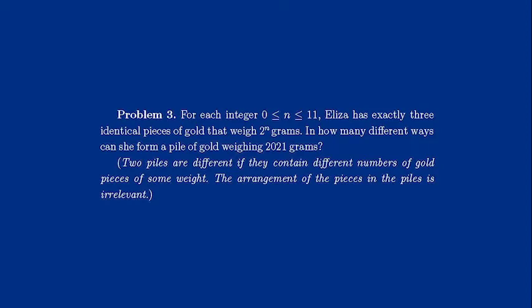There's a clarification. Two piles are different if they contain different numbers of gold pieces of some weight. The arrangement of the pieces in the piles is irrelevant.